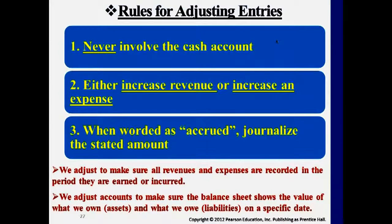All five categories of adjusting entries will never involve cash accounts. The cash has either already been paid earlier, or the cash will come in later. If it's accounts receivable, cash will be received later. If it's accounts payable, cash payment comes later. The tip here is: if you're trying to figure out which side to put cash on, that's not an adjusting entry — adjusting entries will never involve a cash account.